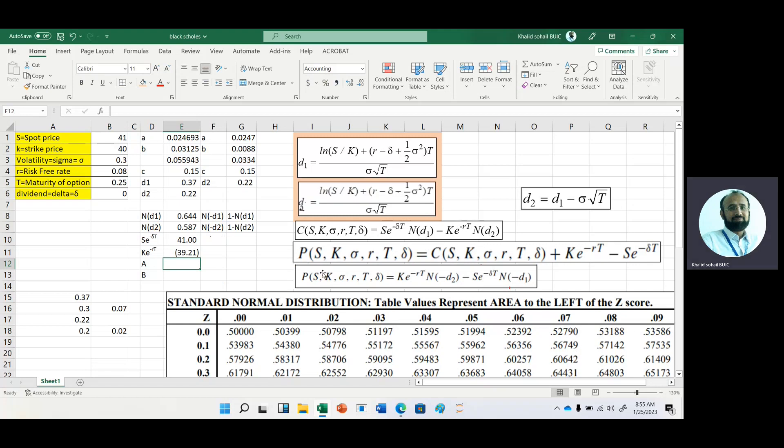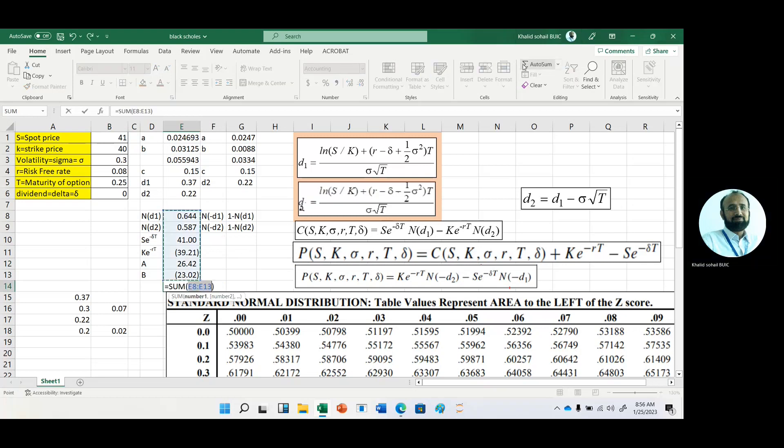For part A, we multiply by N(d1). And for part B, we have K times e multiplied by N(d2). Because we already inserted the negative, just sum it.